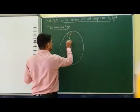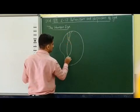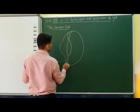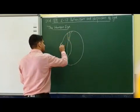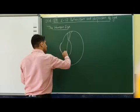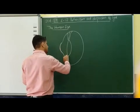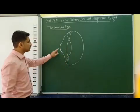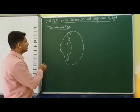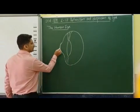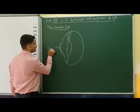When we are considering the parts of the human eye, the human eye consists of an outer part. This is the outer part of the human eye. So this part we can call it as the outer coat.